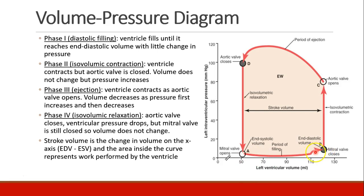— that's the atrial kick when the atrium contracts, adding a little bit more volume and pressure. The end diastolic volume is at point B. At that point, the mitral valve is closed and no more volume can come into the heart. Now systole begins — contraction of the ventricle. But the aortic valve is still closed, so while the heart is contracting, it's not ejecting any blood. Volume doesn't change but pressure goes up. We call this iso-volumic contraction.